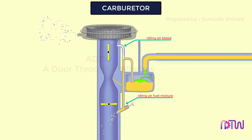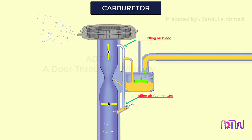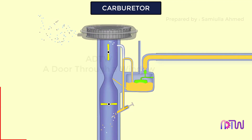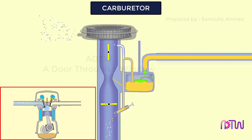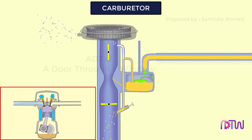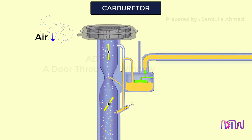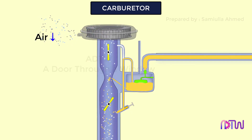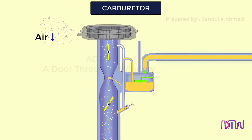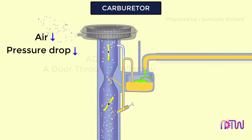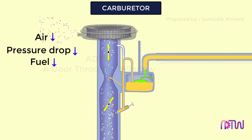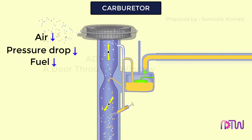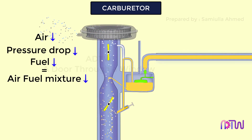If the throttle valve is fully closed, no air will flow through the venturi; in this case the idler air bleed will supply sufficient air-fuel mixture so that the engine is idling — meaning the engine is kept running when the vehicle is not in motion. If the throttle valve is partially open, less air flows through the venturi, producing less pressure drop, which causes less fuel to discharge through the discharge nozzle, resulting in less air-fuel mixture delivered to the engine cylinder.